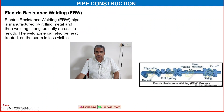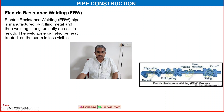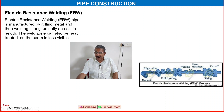One of the commonly used methods is electric resistance welding, ERW in short form. Electric resistance welding pipe is manufactured by rolling metal and then welding it longitudinally across its length. The weld zone can also be heat treated so the seam is less visible. This is the simple pictorial representation of the electric resistance welding process for pipe manufacture.